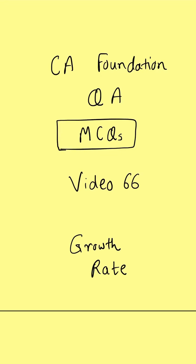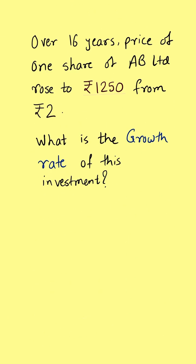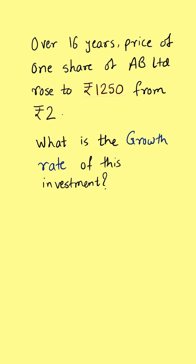Welcome to CA Foundation QA video 66. Today we have an MCQ from the chapter of mathematics of finance, or TVM — time value of money. Over 16 years, the price of one share of AV Limited rose to 1250 rupees from 2 rupees. What is the growth rate of this investment?